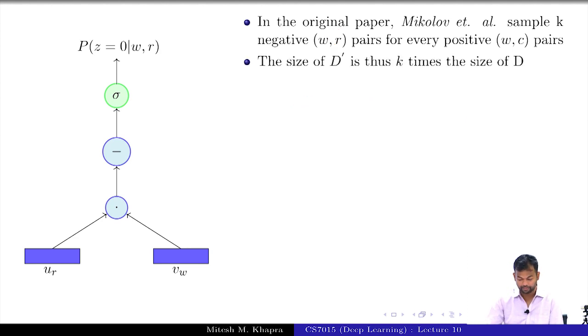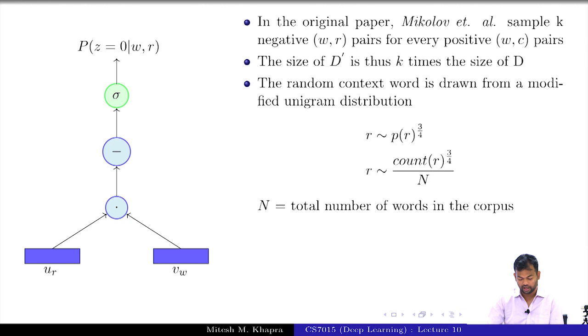They did something similar, but they had this hyperparameter again. Basically I was sampling using the probability of R which is equal to count of R divided by the number of all words in the corpus - that's actually the frequency of R divided by the total number of words in the corpus. Instead of just taking that, they had this weird factor of 3 by 4. They realized that if you take this 3 by 4, you get the best performance. Let me make a few comments on that.